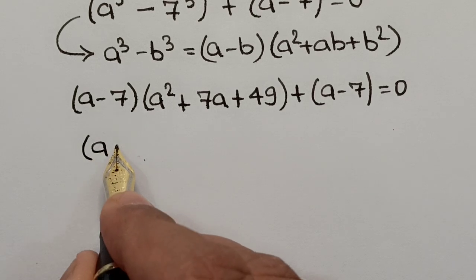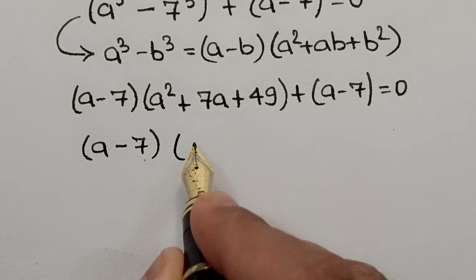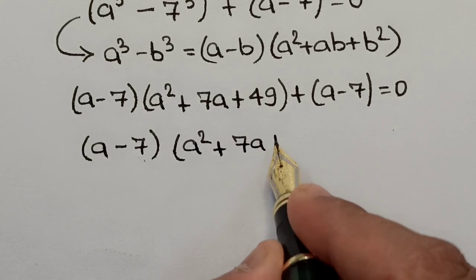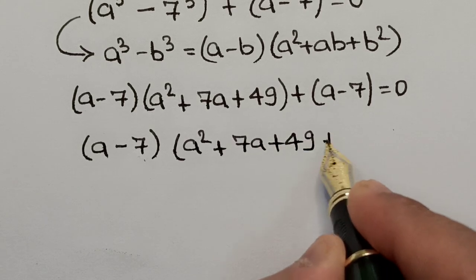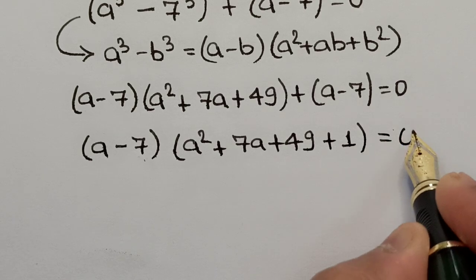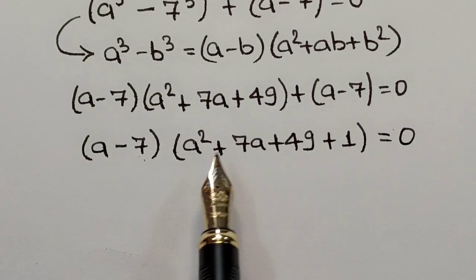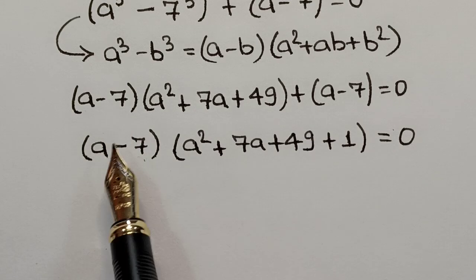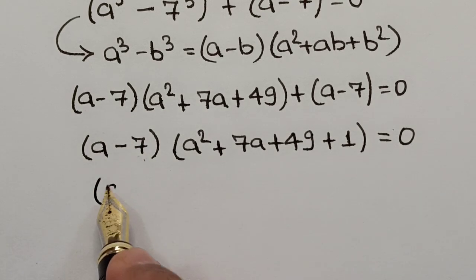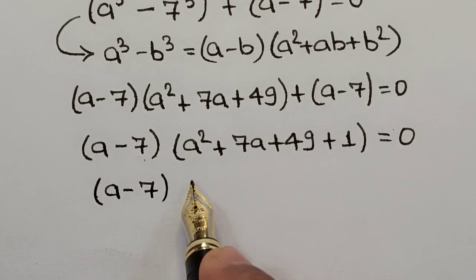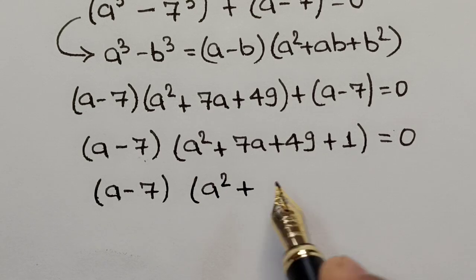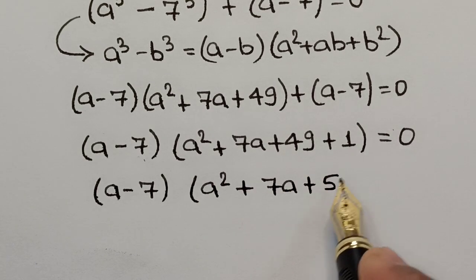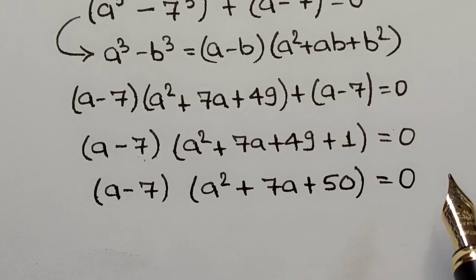Factoring out (A - 7), we get (A - 7)(A² + 7A + 49 + 1) = 0, which simplifies to (A - 7)(A² + 7A + 50) = 0.